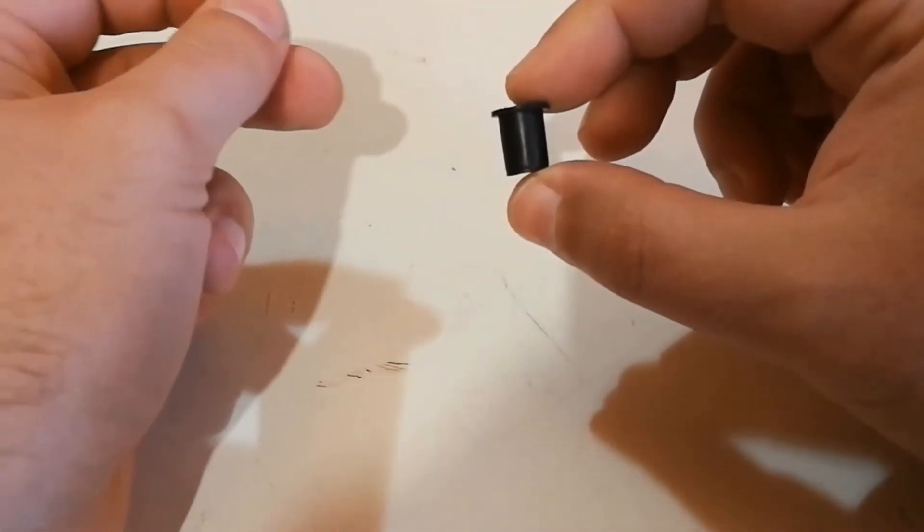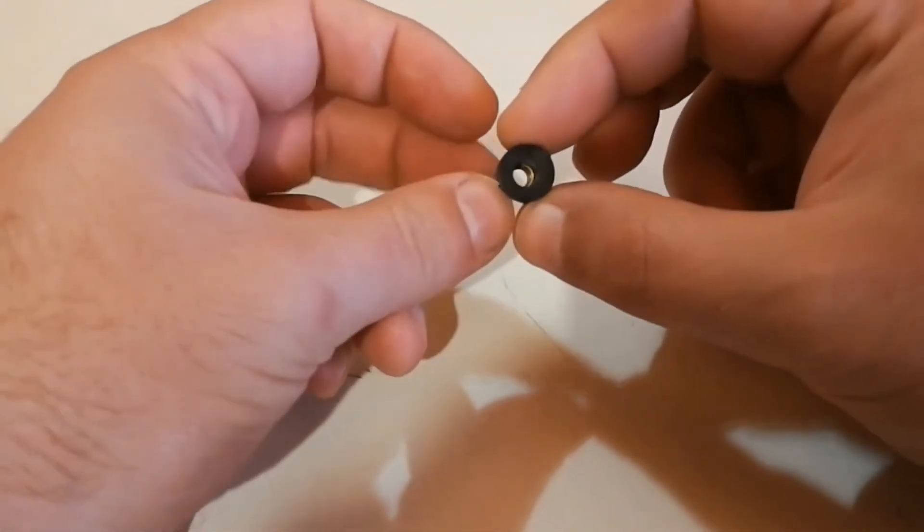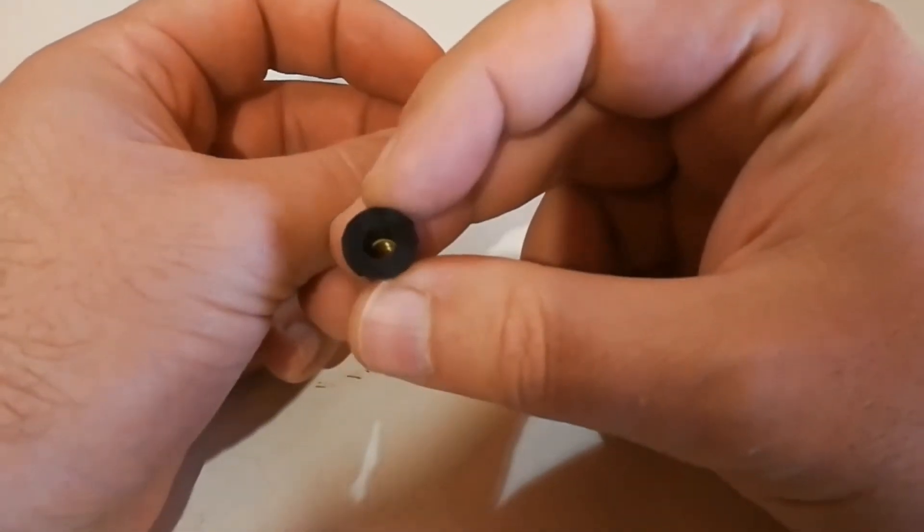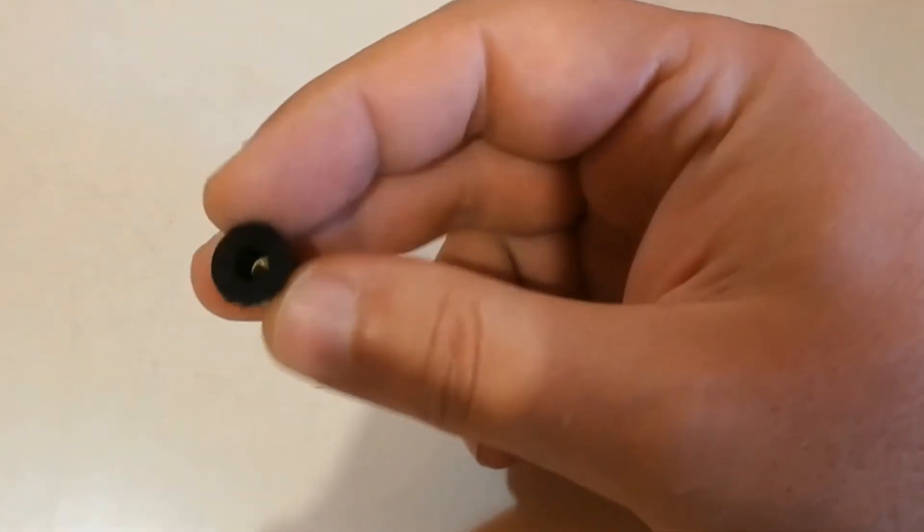It prevents vibration to transfer from one part to another. As you can see there is a metal nut in that rubber part.